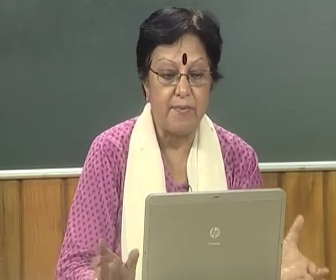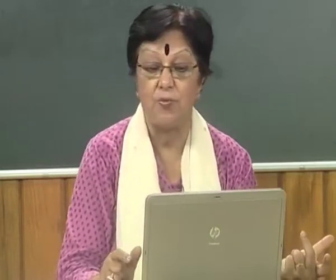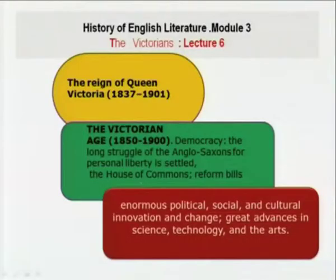In Lecture 6, the Victorians and the reign of Queen Victoria, we found democracy — the long struggle of Anglo-Saxons for personal liberty is settled. We have the House of Commons, participation of people in governance, enormous political, social, and cultural innovation, great advances in science and the scientific treatises, and technology and the arts.